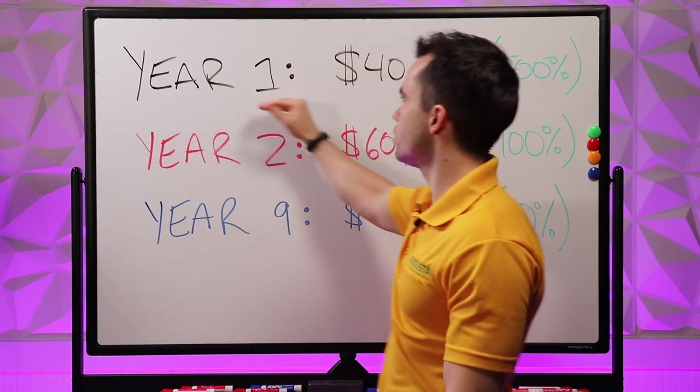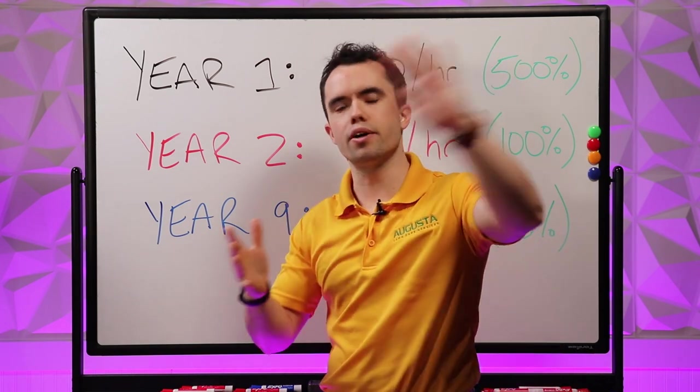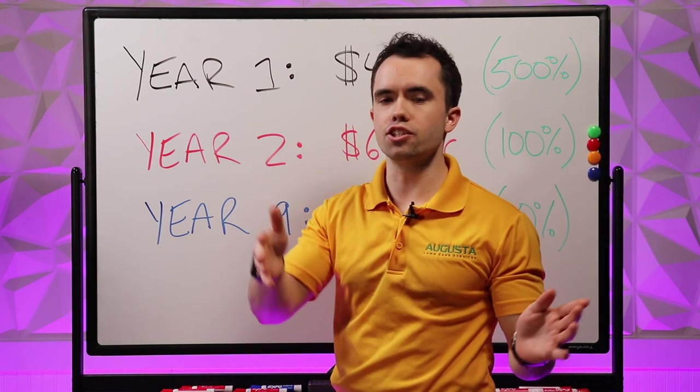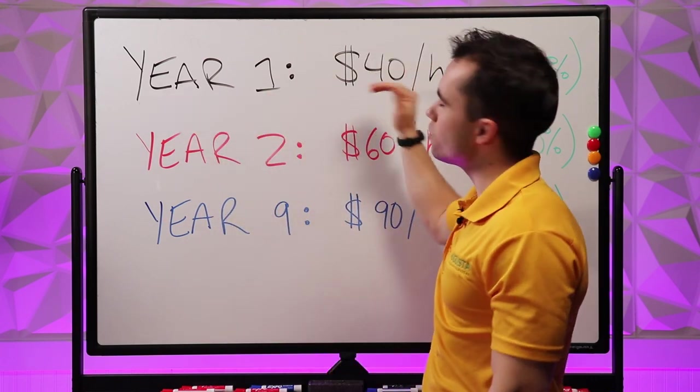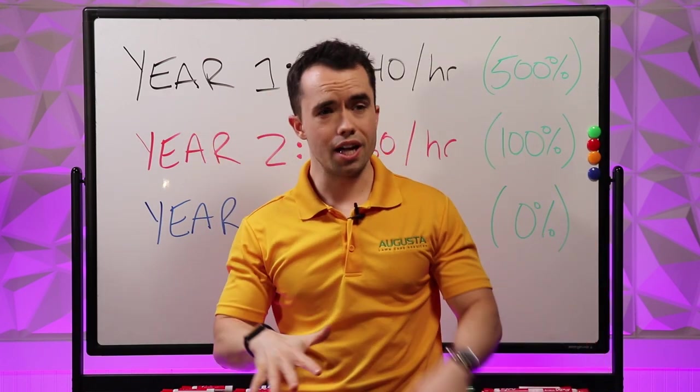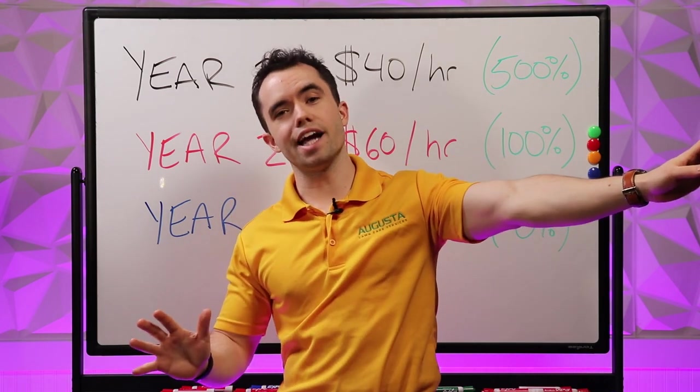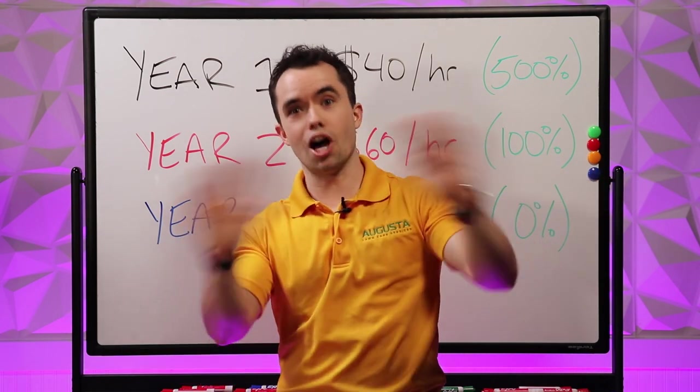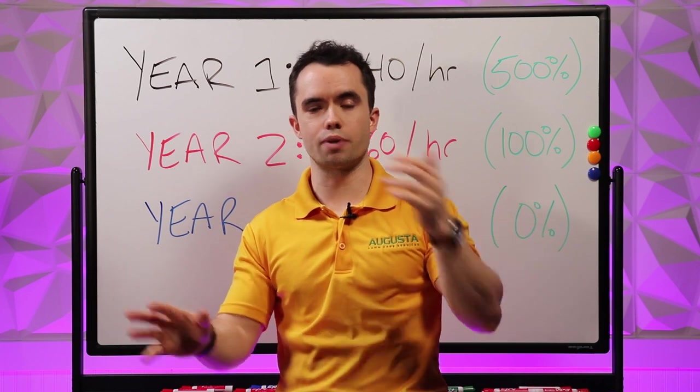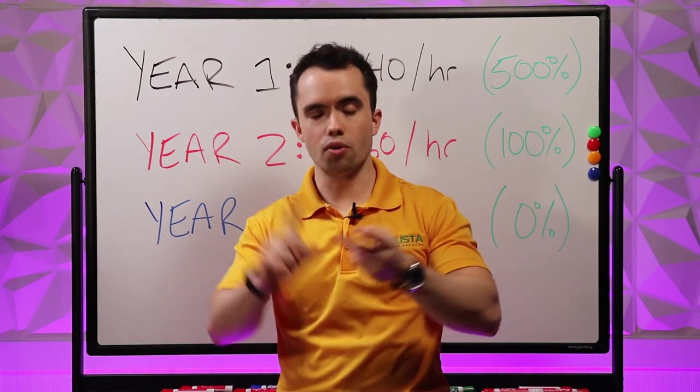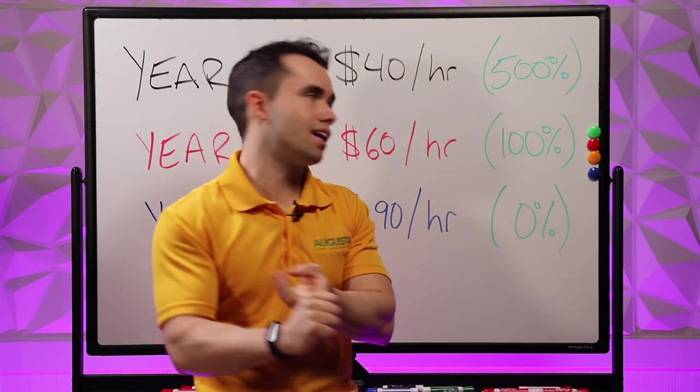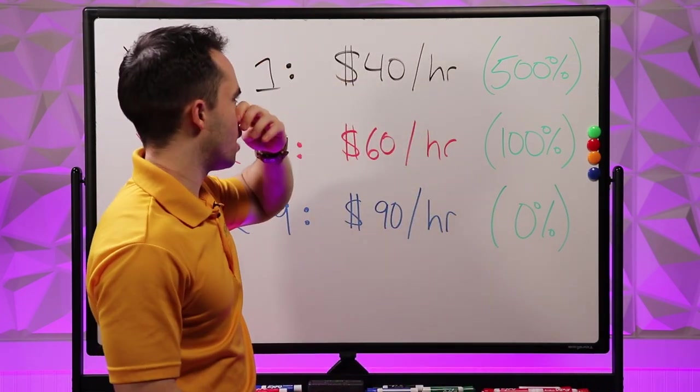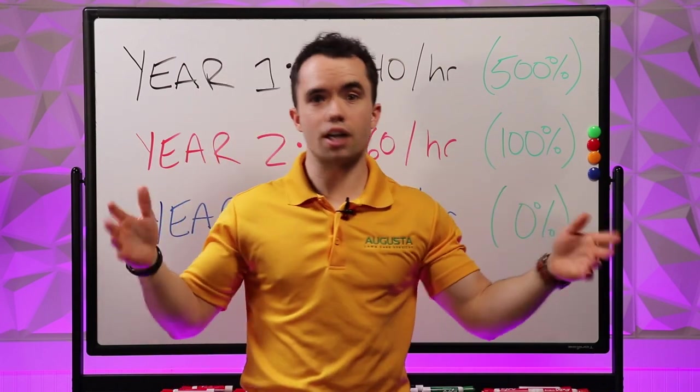So let's go ahead and start with my first year as Augusta Lawn Care. Now I started mowing grass when I was 11. At 18 years old I started Augusta Lawn Care and really started to scale it up. In year one I was charging $40 per hour. Now keep in mind this is nine years ago almost and I would not recommend anyone charging $40 per hour if you're going to be trying to hire people and have a high premium type service that's going after a high-end client. But I charged $40 per hour and I was able to get a lot of customers.